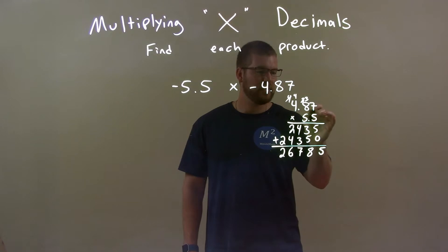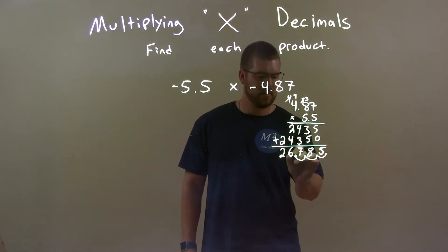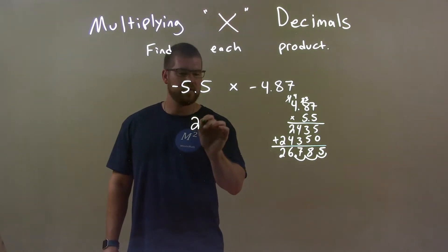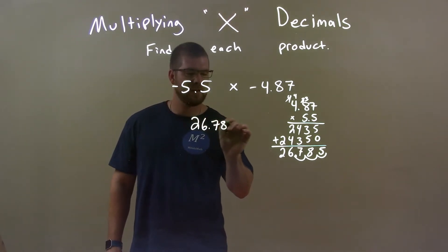We have how many decimal places total? 1, 2, and 3. Right? So we have 1, 2, 3 right there. There's where our new decimal place should be. So, we have 26.785.